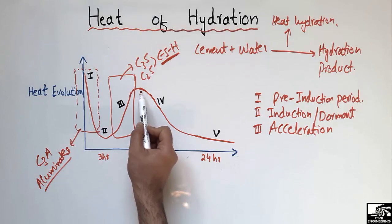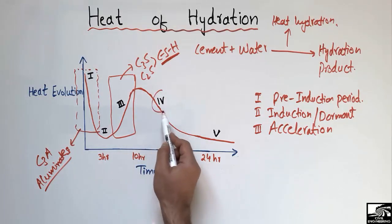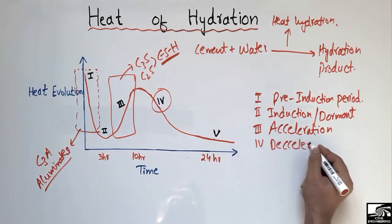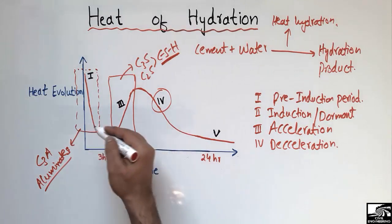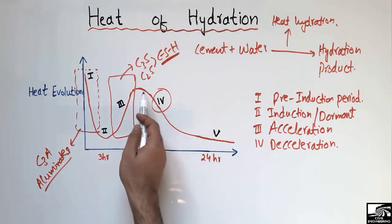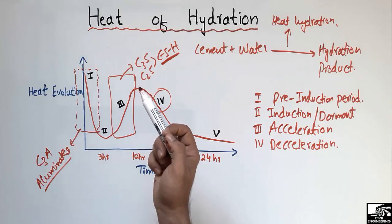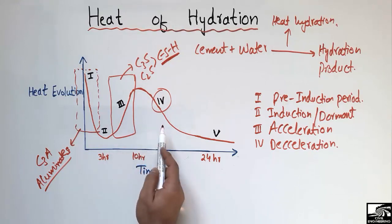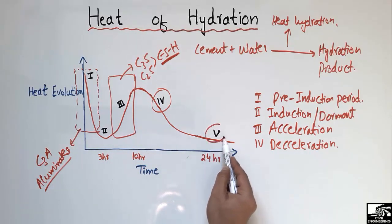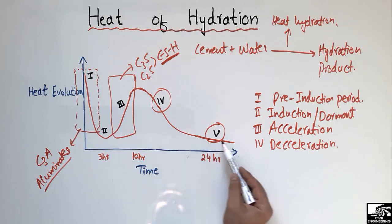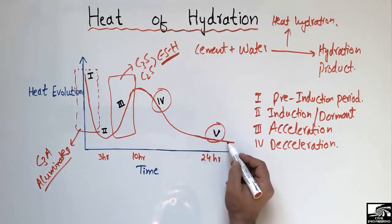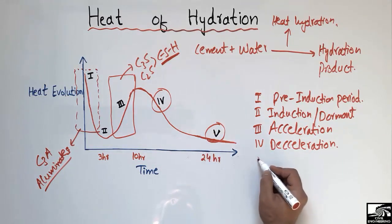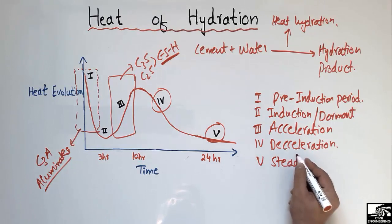After about 10 hours of increasing, the heat begins to decrease again. This period is known as the deceleration period, because most of the C3S and C2S components have reacted with water, and only some molecules are still reacting, producing some heat of hydration. After this, there is a steady state — no sudden drop or change — and it remains constant throughout the cement's life after 24 hours. This is called the steady state period.